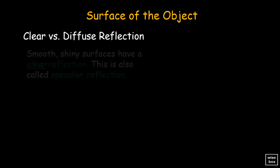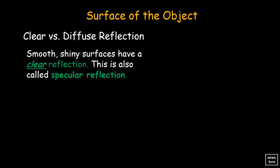Here is the effect of the surface of the object on how light is reflected. Smooth, shiny surfaces have a clear reflection, and this is also called specular reflection.